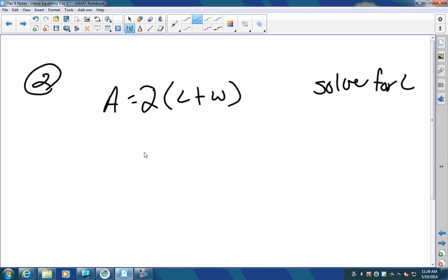So for this one, first thing you need to do is the distributive property. Two times L, two times W. So I get A equals two L plus two W. I'm still trying to solve for L so I need to move the two W to the left. So I'm going to subtract two W from each side.